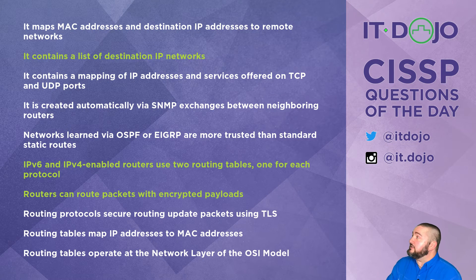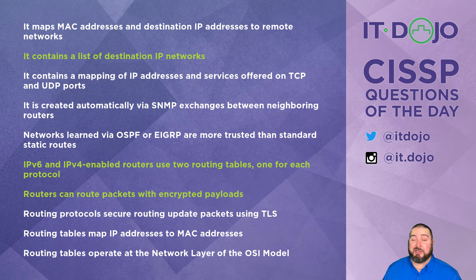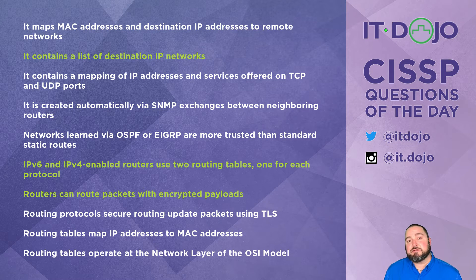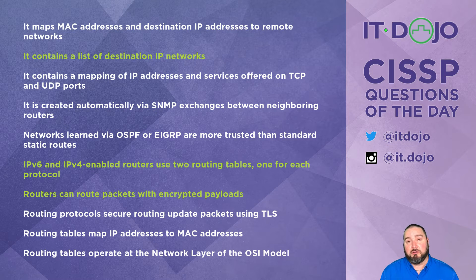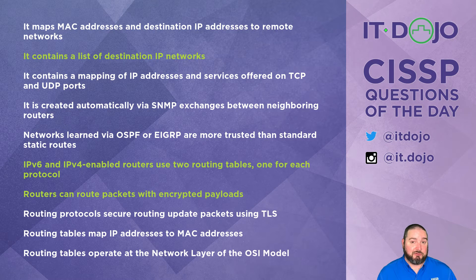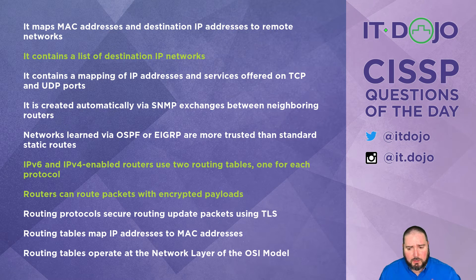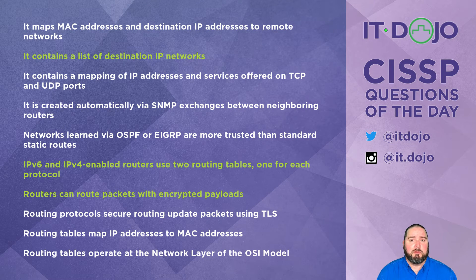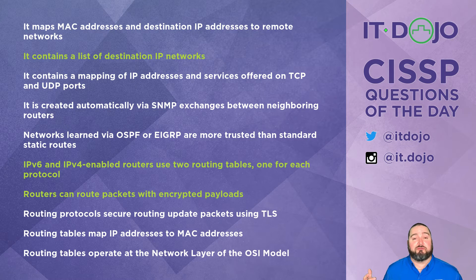Next contender says that routers, when exchanging routing protocol updates, secure them using TLS or Transport Layer Security — nope, definitely not true. Next: routers map MAC addresses to IP addresses — no, that's what ARP does, the Address Resolution Protocol. In IPv4 we use ARP; in IPv6 we use a multicast ICMP packet to accomplish the same result. None of that has anything to do with IP routing tables — it's all about local ARP caching or its IPv6 equivalent.